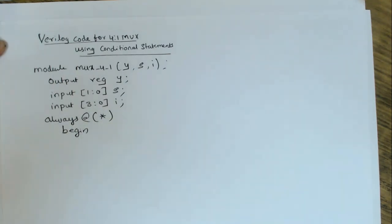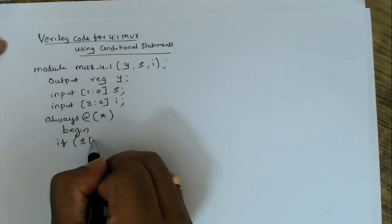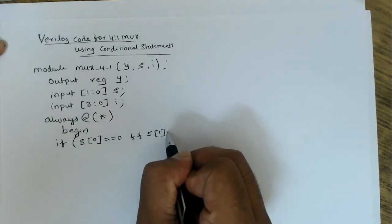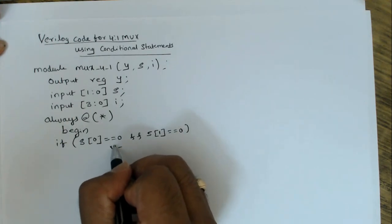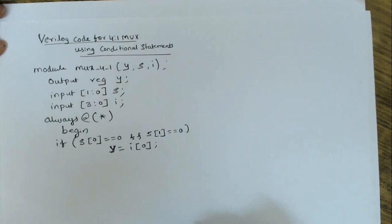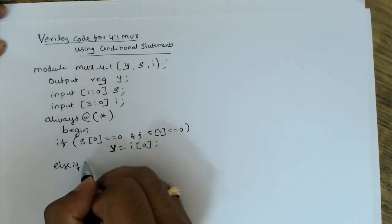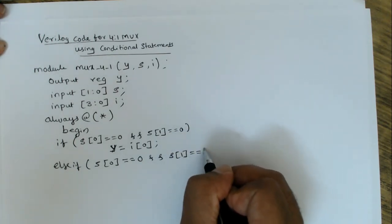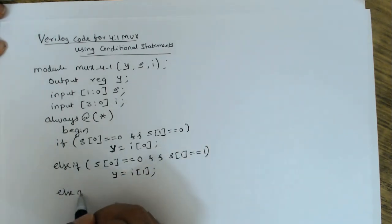We begin the if-else statement: if the least significant bit s[0] is 0, and most significant bit s[1] is also 0, then y is assigned i[0]. Else if s[0] is 0 and s[1] is 1, then y is assigned the second input i[1].